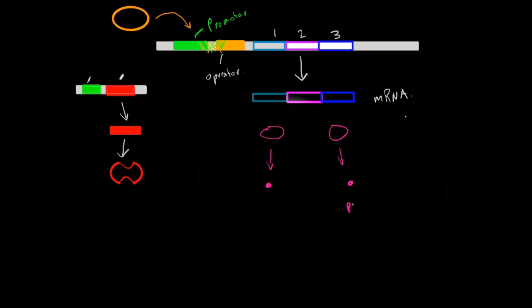So this is the product which is in my example here, tryptophan, which will come and bind to this repressor, activate it, and then cause it to bind to the operator and stop transcription because there's already enough tryptophan.